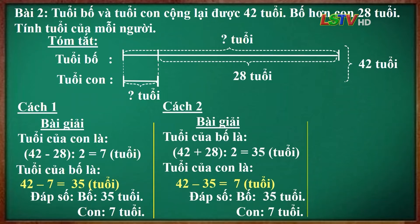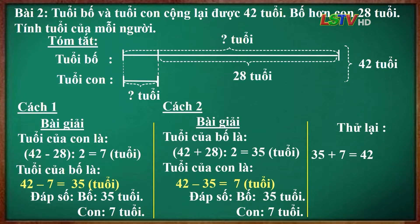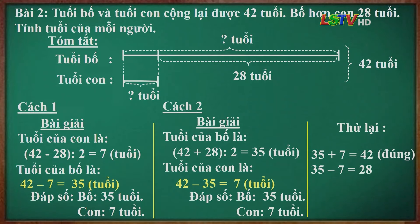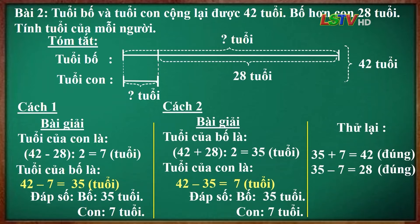Để kiểm tra kết quả có đúng hay không, các em thử lại như sau: lấy tuổi của bố cộng tuổi của con, tức là 35 cộng 7 bằng 42 tuổi — đúng với tổng của bài toán. Và lấy tuổi của bố trừ tuổi của con, tức là 35 trừ 7 bằng 28 tuổi — đúng với hiệu của bài toán.